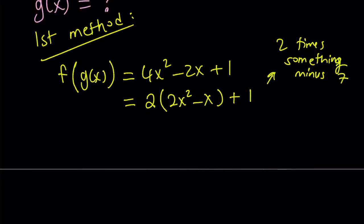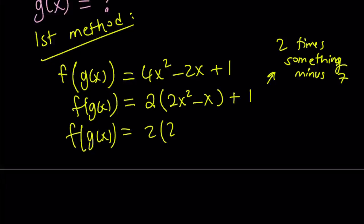In order to get 2 times something minus 7, we can go ahead, this is f(g(x)), I can write it as follows. First of all, I want to get a minus 7 from here. So let's go ahead and write the 1 as 8 minus 7, which is true. Let's check it out: 8 minus 7, yeah, that's equal to 1. Great.